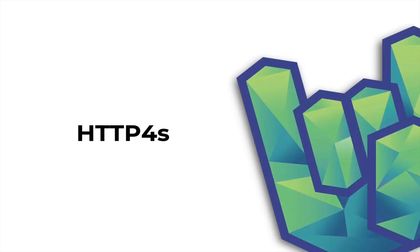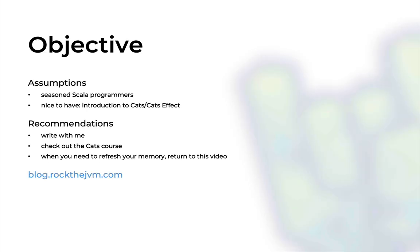Hello ladies and gentlemen, this is Daniel for Rock the JVM, and in this video we will explore HTTP4S in a comprehensive tutorial. HTTP4S is one of the most prominent libraries for Scala HTTP servers and clients, and this video will attempt to deconstruct most of its critical features. This video will be quite difficult, so this is generally for comfortable Scala programmers and maybe you've had an introduction to Cats or Cats Effect, for which we have a bunch of videos here on the Rock the JVM channel and a bunch of courses on the Rock the JVM website.